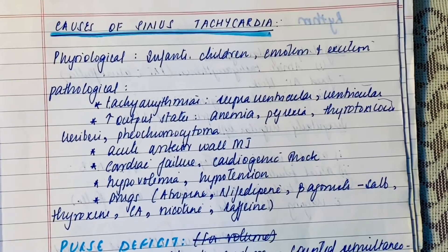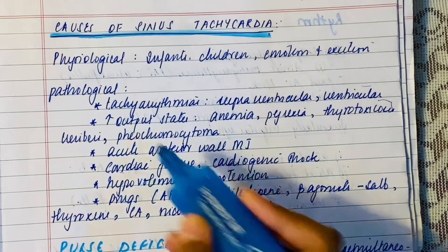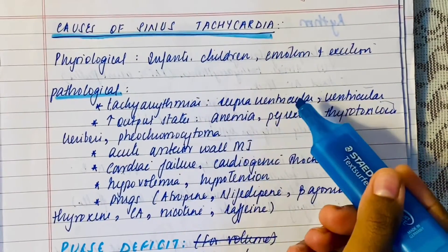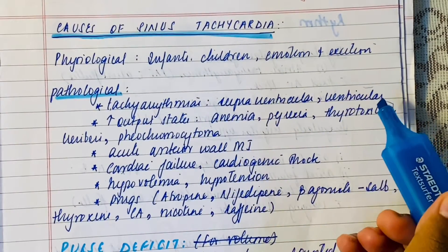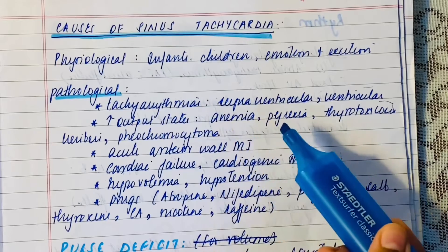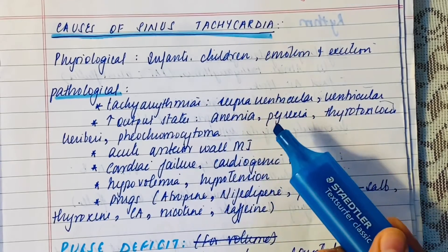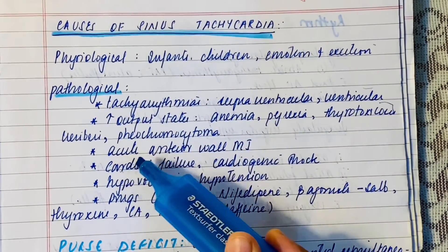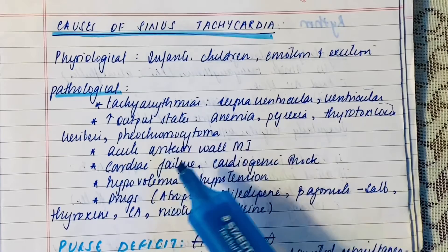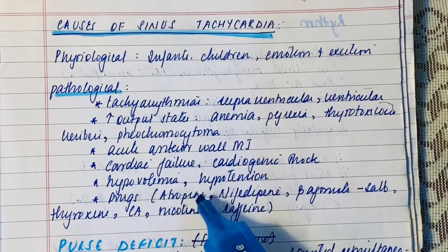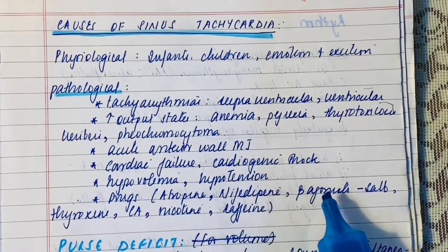Causes of sinus tachycardia can physiologically exist in infants, children, during emotion and excitation. Pathologically it can be present during tachyarrhythmias like SVTs or VTs, or increased output states like anemia, pyrexia, thyrotoxicosis, beriberi, pheochromocytoma, in acute anterior wall MI, cardiac failure, hypovolemia, hypotension, or drugs like atropine, nifedipine, etc.